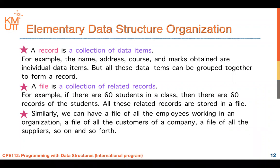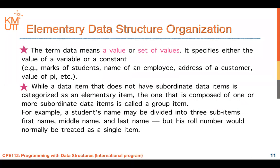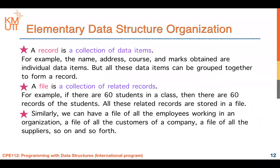If you have many records, you can collect them into a file. A file is a collection of related records. For example, if there are 60 students in the class, then there are 60 records for students — all kept in one file. Similarly, you can have a file of all employees in an organization, a file of customers, or a file of suppliers. So we have learned the terminology: value, data item, record, and file — the basic terminology in data structures.